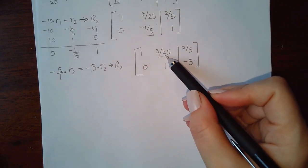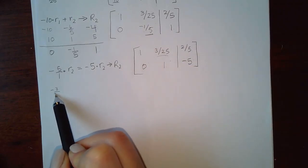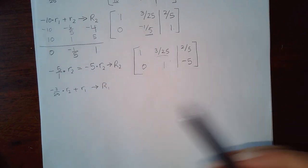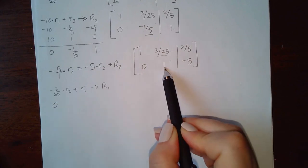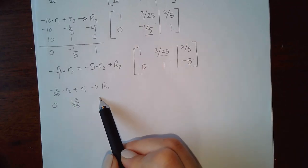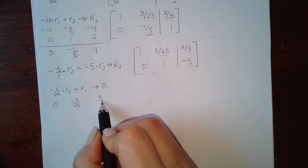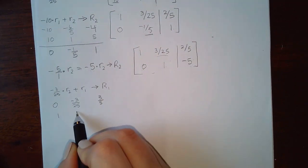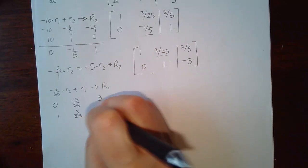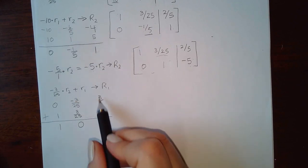Now I need to turn the 3/25 in row 1 into a 0, which means I need to add -3/25 times row 2 to row 1. So: 0 × (-3/25) = 0; 1 × (-3/25) = -3/25; and (-5) × (-3/25) = 15/25, which reduces to 3/5. Placing row 1 underneath and adding gives 1, 0, and 5/5.